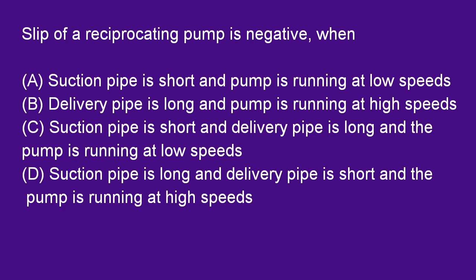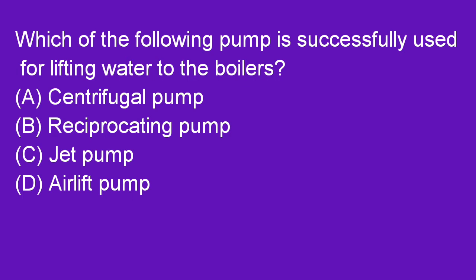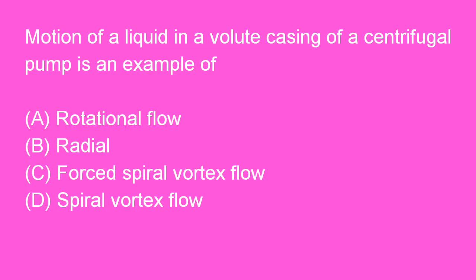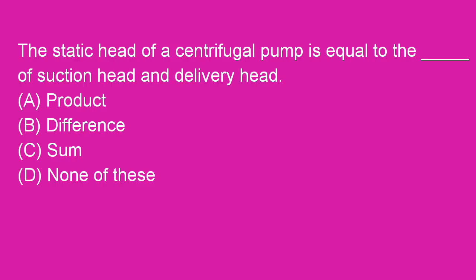Next question: Slip of a reciprocating pump is negative when the suction pipe is long and delivery pipe is short and the pump is running at very high speed. Option D is right. Next question: Which of the following pump is successfully used for lifting water to the boiler? The pump used is a jet pump. Option C is right. Motion of liquid in a volute casing of a centrifugal pump is an example of spiral vortex flow. Option D is right. The static head of a centrifugal pump is equal to the sum of suction head and delivery head. Option C is right.